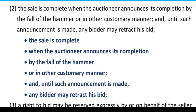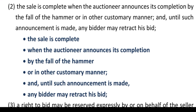मतलब यहाँ बताया गया है कि auction sale का completion का procedure क्या है। As per section 64, by fall of a hammer या other customary manner — जिसमें ringing bell और counting 1, 2, 3 या 1001, 1002 जैसे गिनती बजाना शामिल है — final count होने के बाद sale complete हुआ है ऐसा announcement होता है। जब तक announcement नहीं होती है तब तक bidder अपनी bid retract कर सकता है।